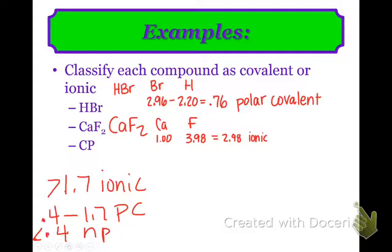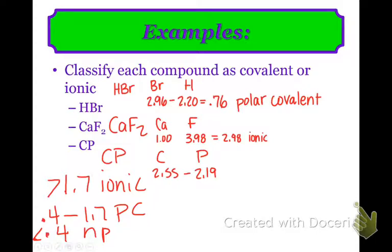Last but not least, I have CP — carbon and phosphorus. Carbon is 2.55 and phosphorus is 2.19. So 2.55 minus 2.19 is 0.36, which falls below 0.4, so that's going to be an example of a nonpolar covalent compound.